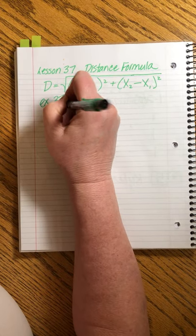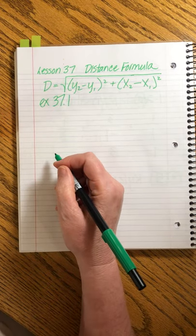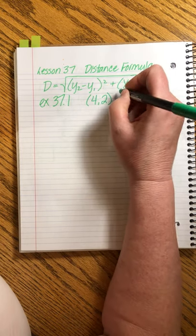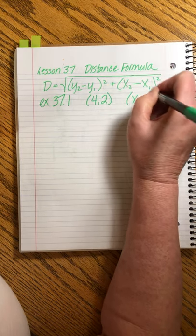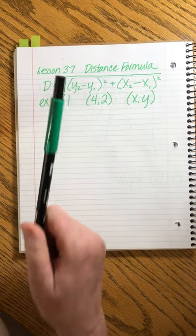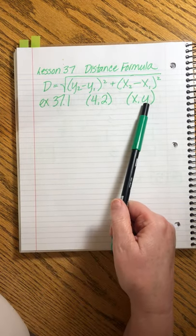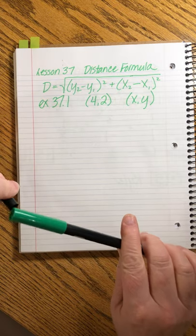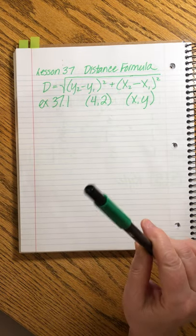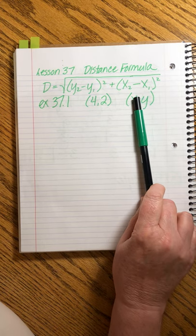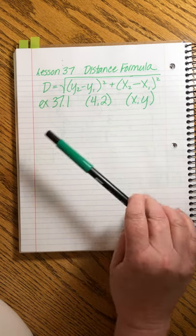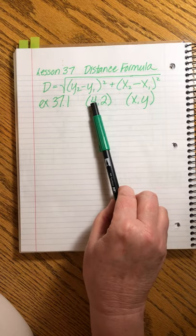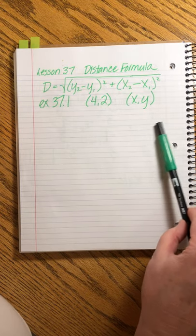Problem 37.1 says write an expression for the distance between (4,2) and (x,y). Now, what Saxon is saying is use the distance formula. You won't be able to come up with a number because I've got x's and y's, but use the distance formula to come up with an equation that would find the distance. Let's say that you had your neighborhood on a grid, and your house was located on the grid at position (4,2), right?